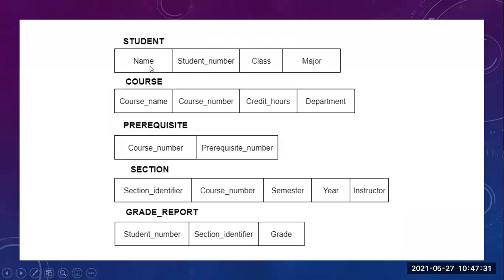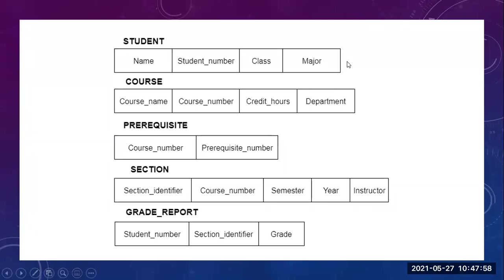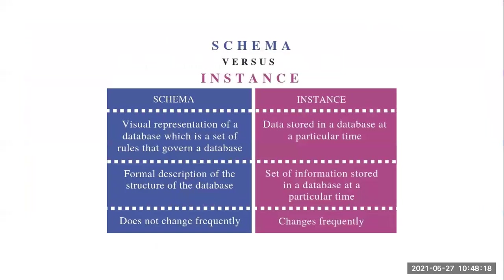Schema does not change frequently. The columns — name, student number, class, major — will remain the same until you decide to add one more column. But instance changes frequently. For example, in the third semester a student's major was Java, but in the fourth semester his highest marks are in DBMS. So that information changes — new data gets added. That is why instance changes frequently. These are the differences between schema versus instance.